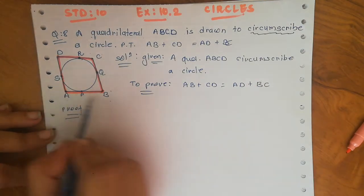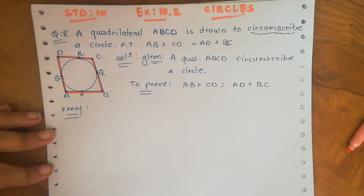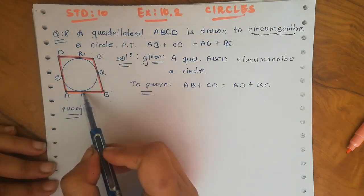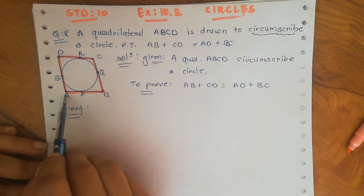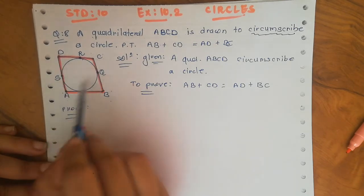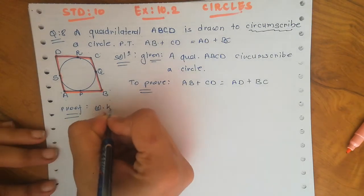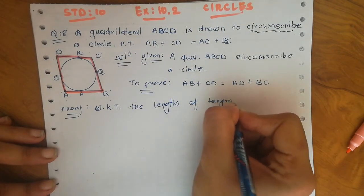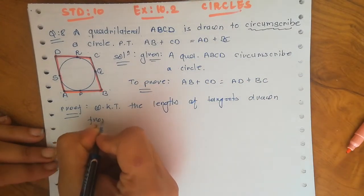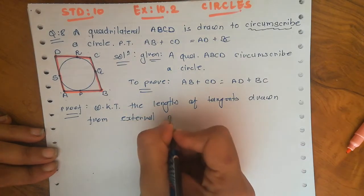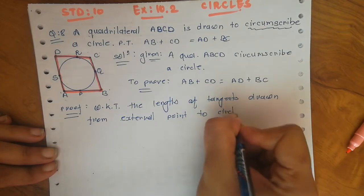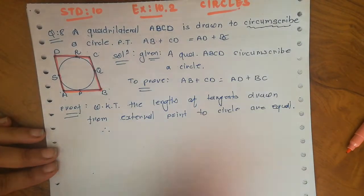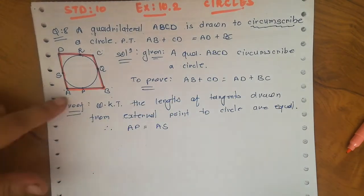Now let's start the proof. From points A, B, C, and D — the vertices of the quadrilateral — tangents are drawn to the circle. We know the theorem: the length of tangents drawn from an external point to the circle are equal.